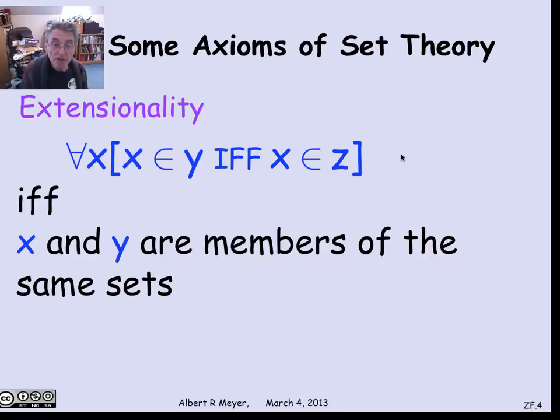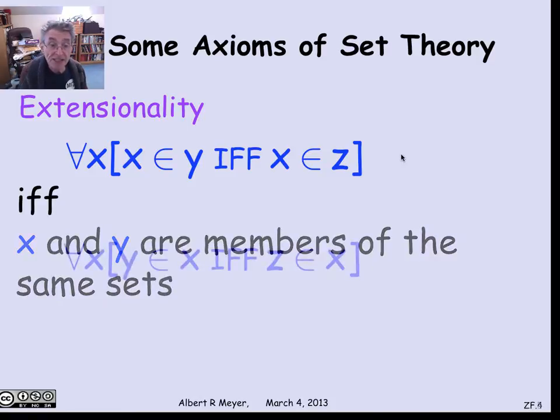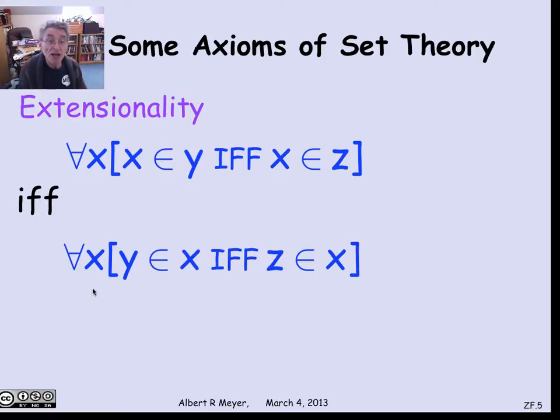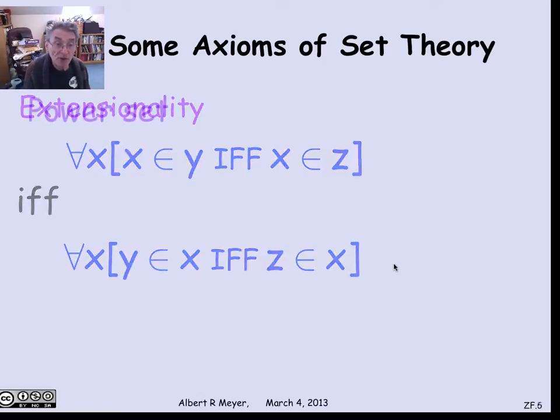So if all the members of y and z are the same, then y and z are members of exactly the same things, which we could say: for every x, y is in x if and only if z is in x. That is one of the basic axioms of set theory, maybe the starting one.